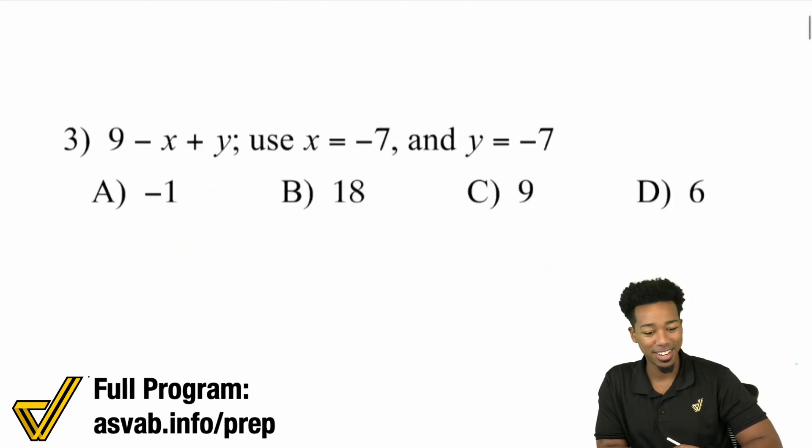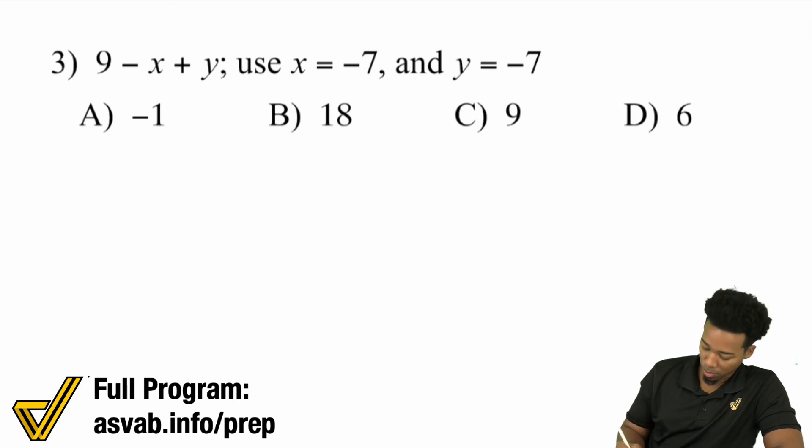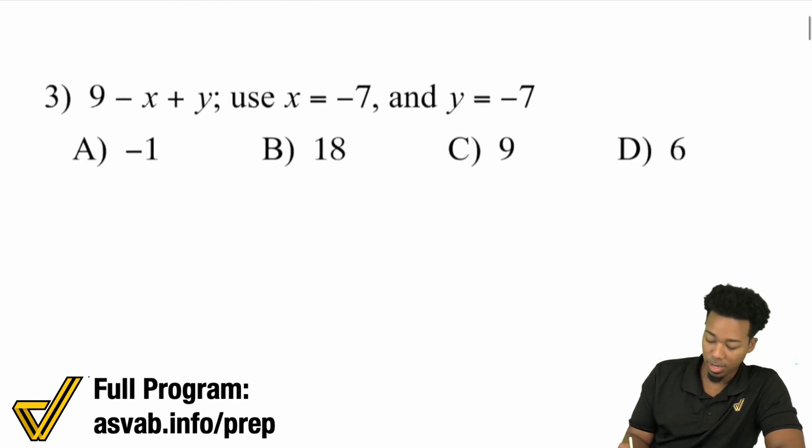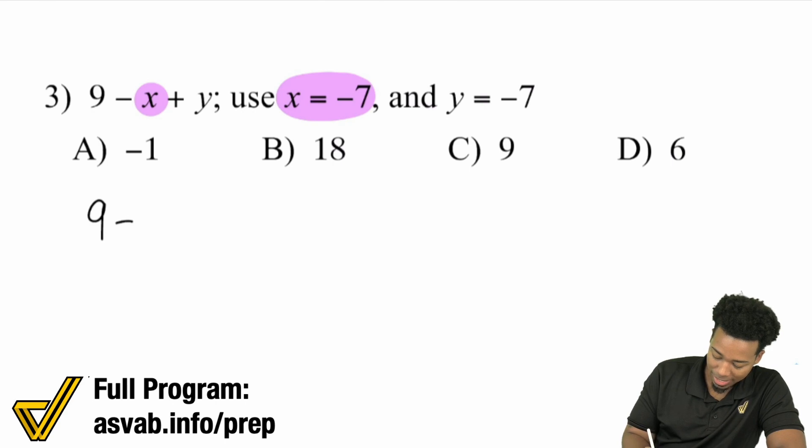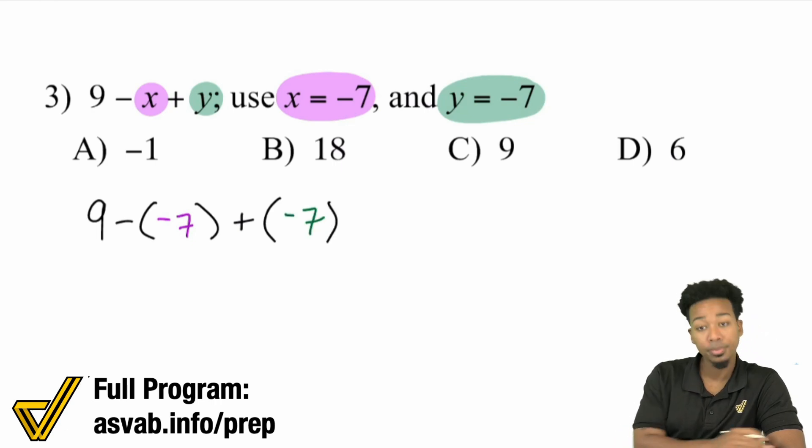Next one, number 3. We have 9 - x + y. We've got to be careful here when it comes to double negatives. Here we have x is -7, there's x right there. So we have 9 - (-7). Then we see over here that we have + y, and y is also -7, so right there, -7.